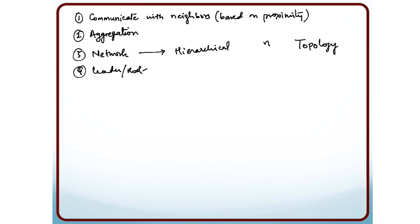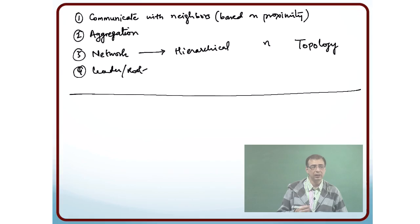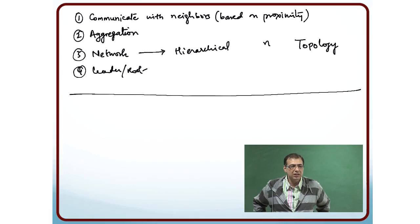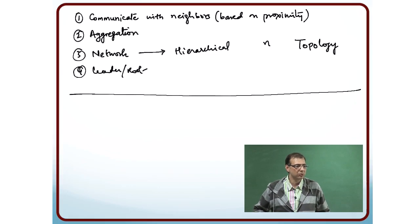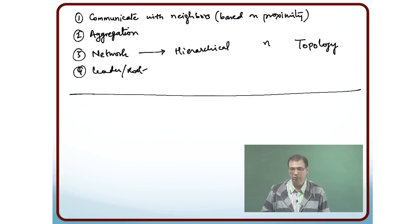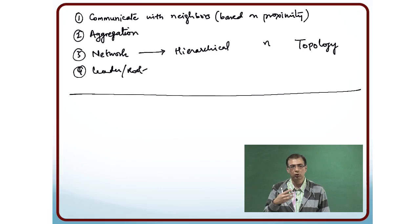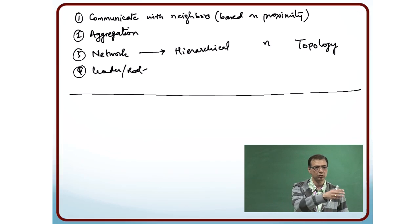Now let us talk about another situation. Here you are basically exchanging messages with each other — it was some kind of message passing, where each one of you was passing some message to your neighbour, which was essentially a number. So there was no shared resource; you did not have some resource in common where you could share information. Instead you chose to talk to each other.